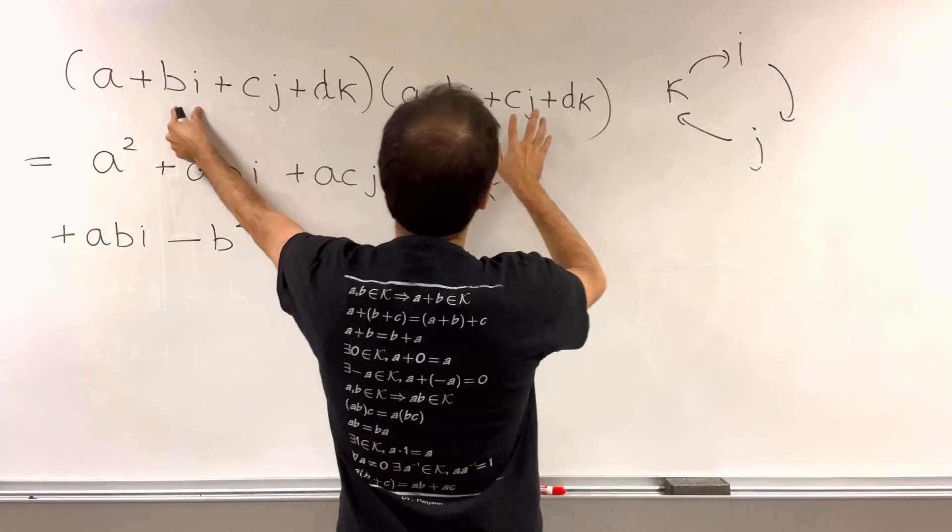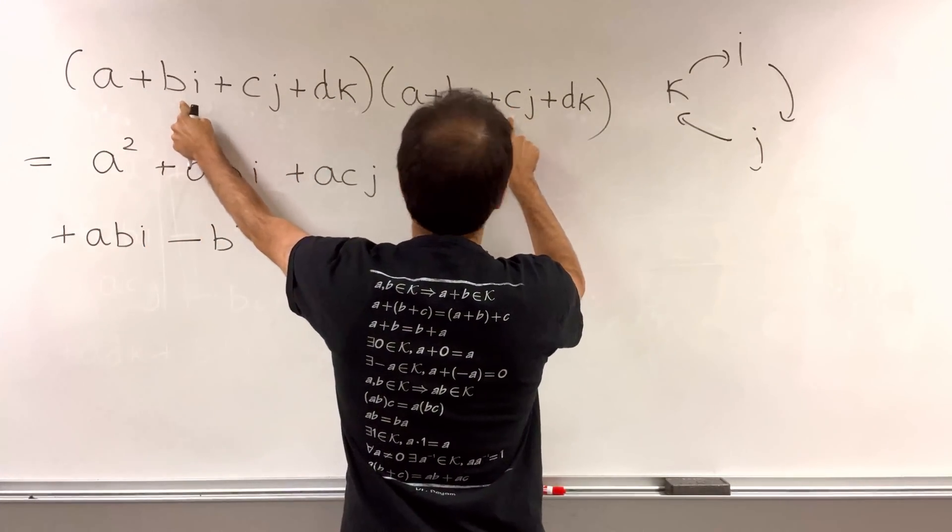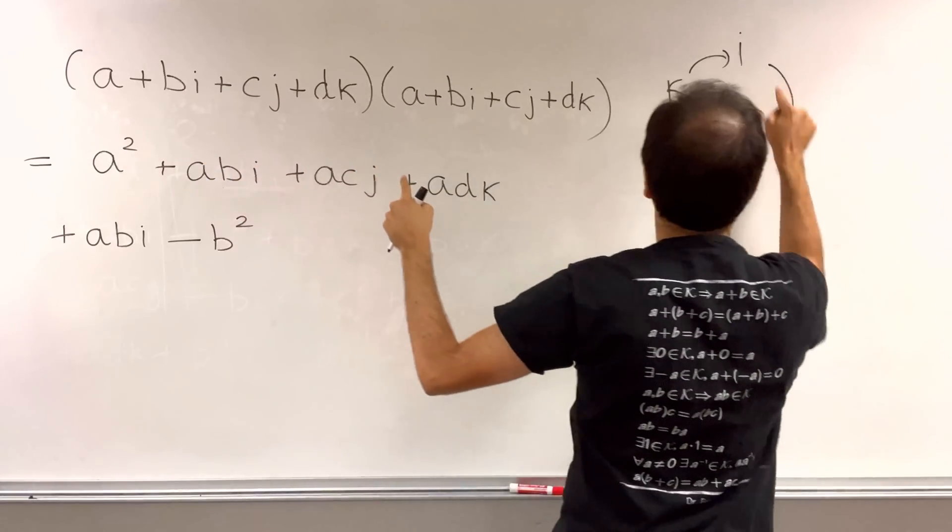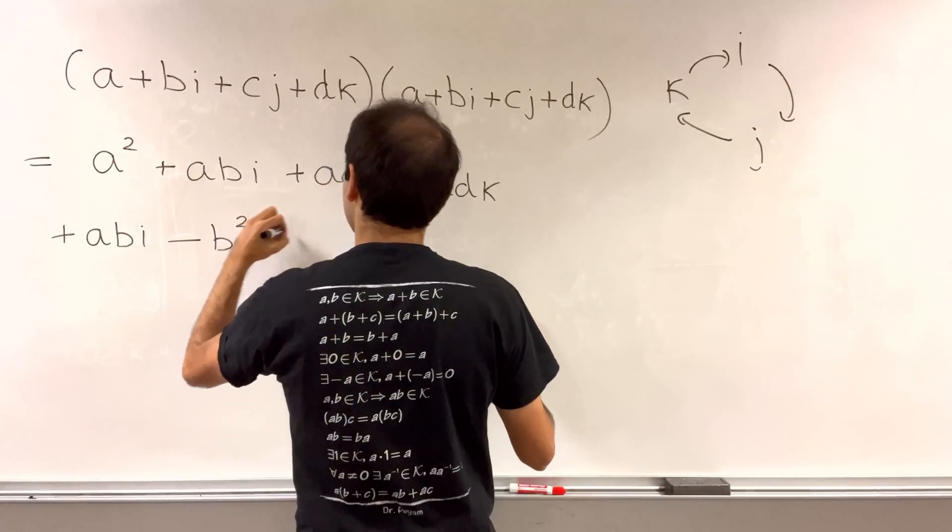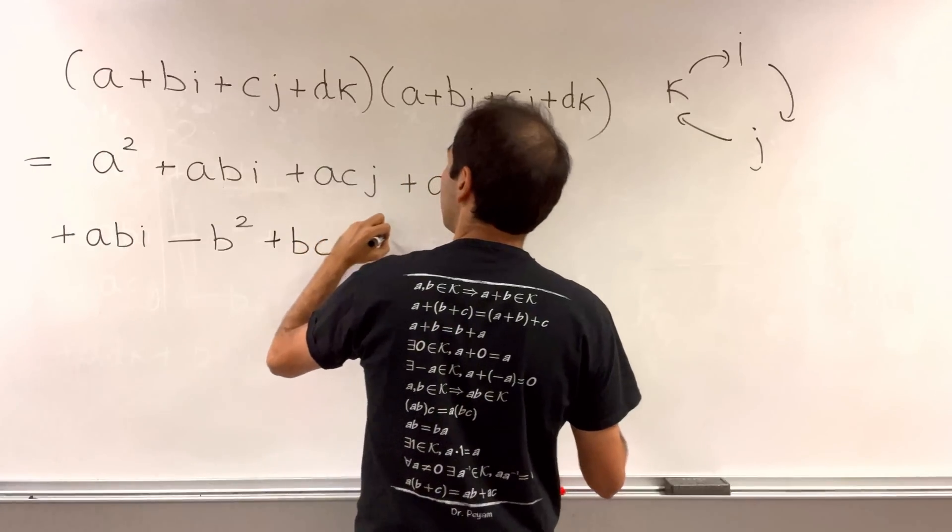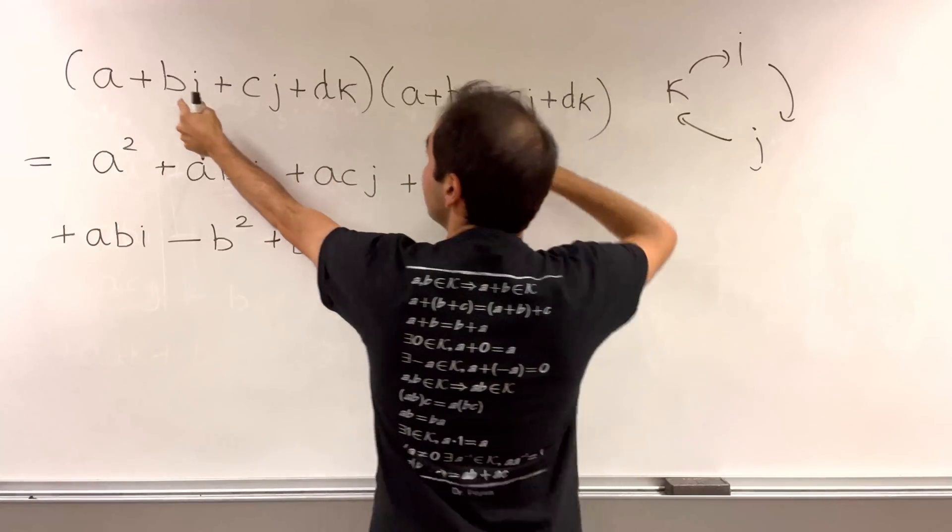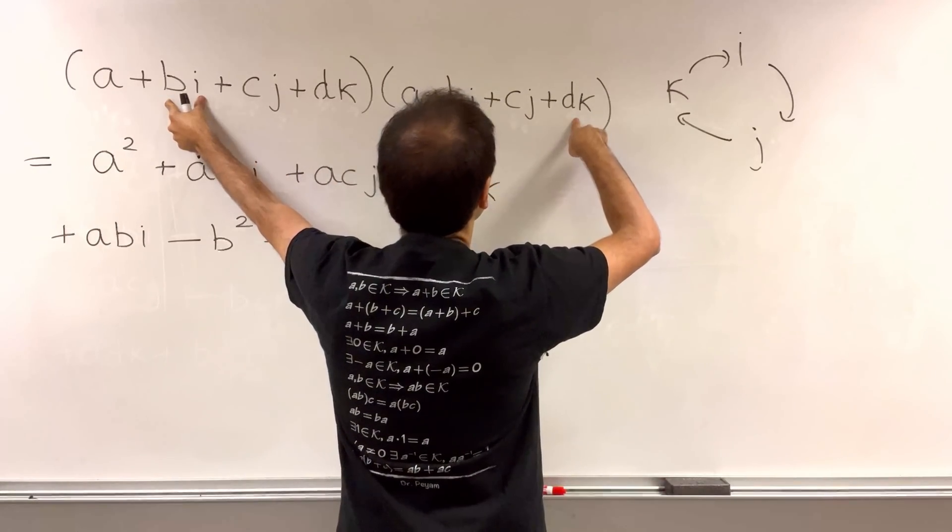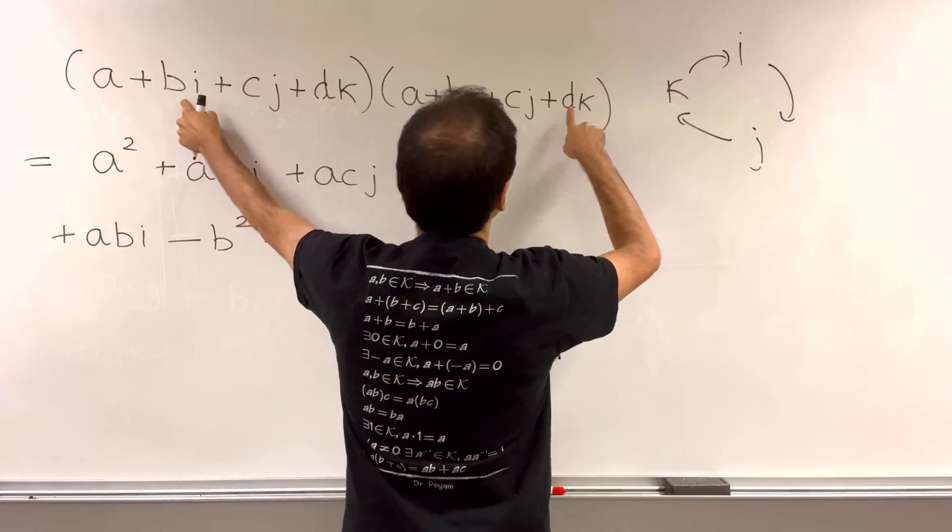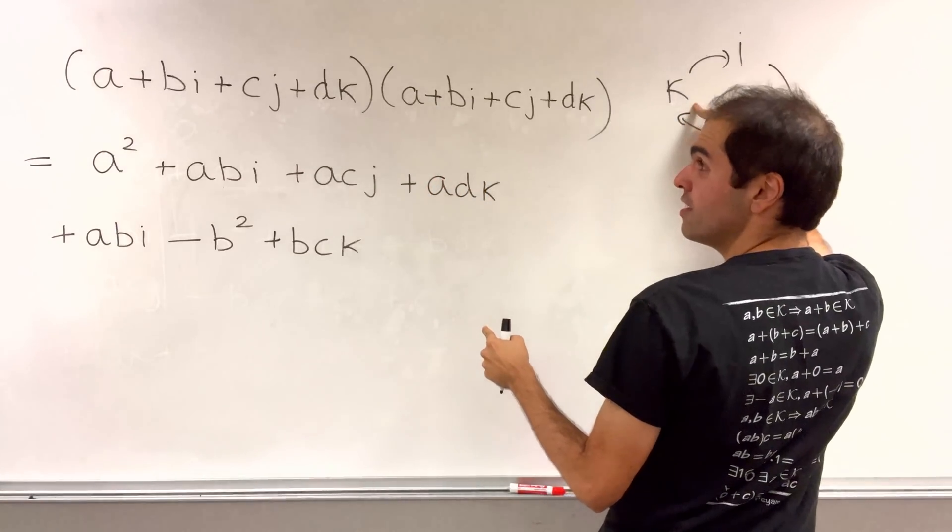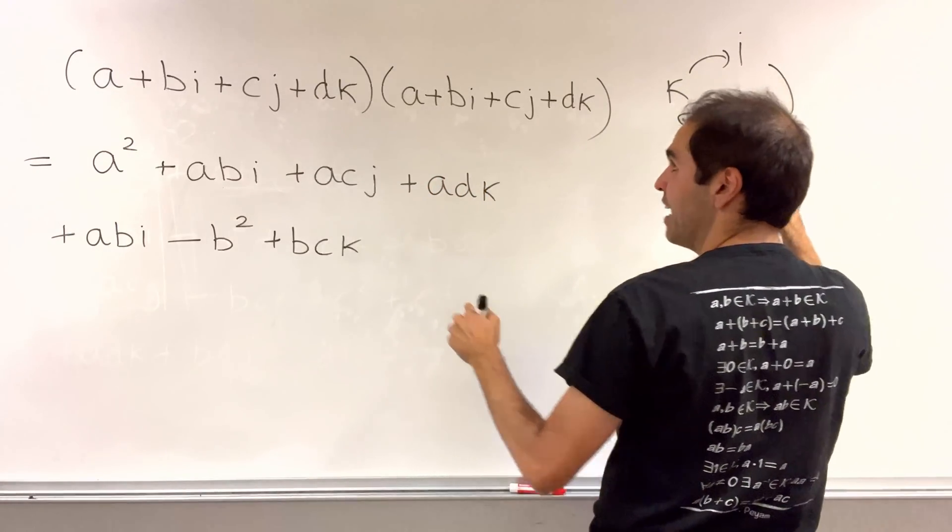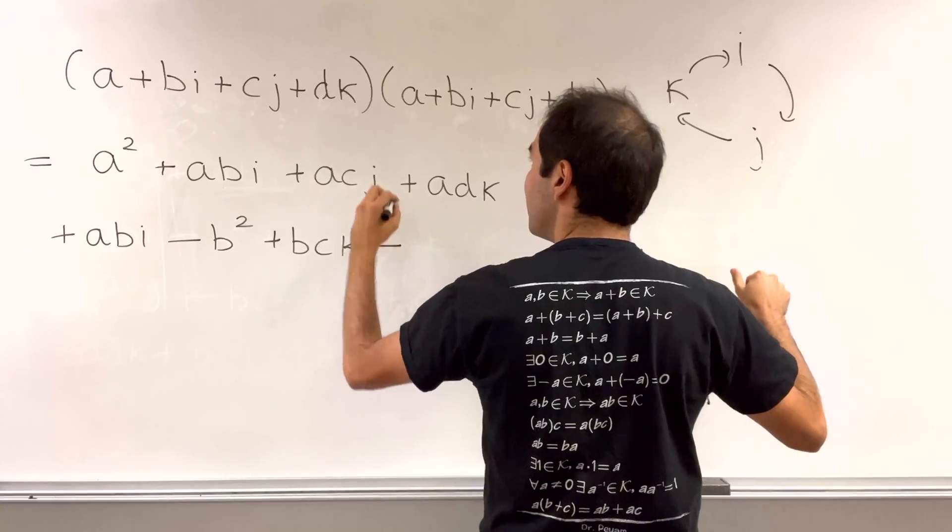And then bi times cj, that's bc times ij, which gives you k. And last but not least, bi times dk, that is bd, i times k, different direction, which is minus j. So minus bdj.